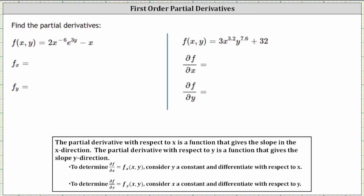For the first example, we are given f(x, y) equals 2x to the power of negative six, times e to the power of 3y, minus x. To find the partial of f with respect to x, we differentiate with respect to x, treating y as a constant. The derivative of 2x^(-6) * e^(3y) with respect to x is equal to 2 times the exponent negative six, times x to the power of negative seven, and then still times e to the power of 3y, because we treat e^(3y) as a constant.